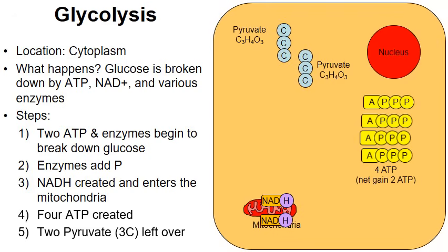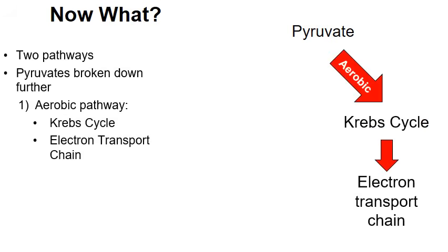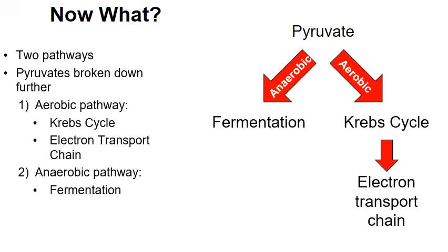Four ATPs were created but two ATPs were used to start glycolysis, so subtracting those gives a net gain of two. What happens next depends on the type of cell and its conditions. There are two possible pathways, both involving those pyruvates. The aerobic pathway with oxygen leads to the Krebs cycle and the electron transport chain. If oxygen is lacking and the cell is in an anaerobic environment, those pyruvates will be used in fermentation. This video follows the aerobic pathway.